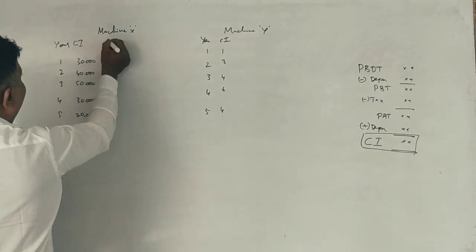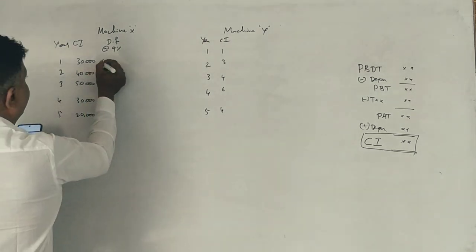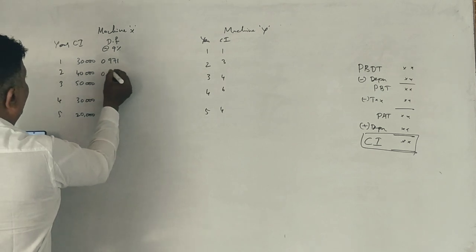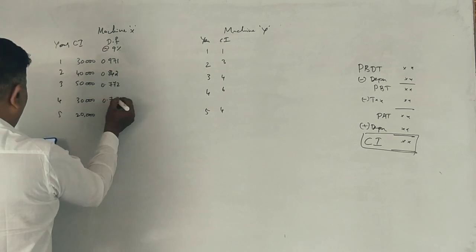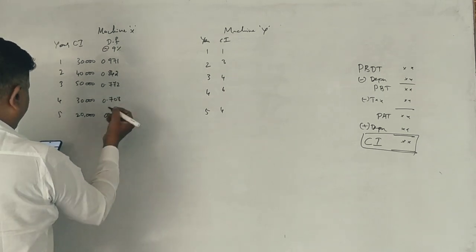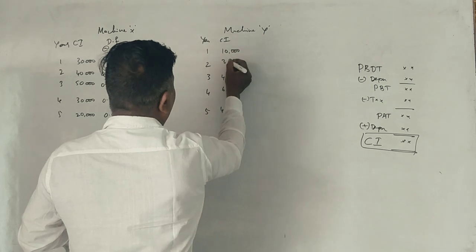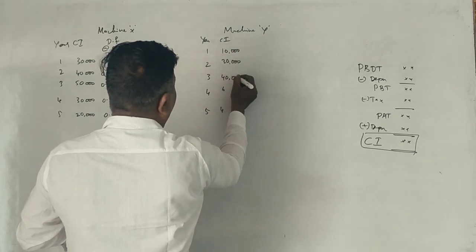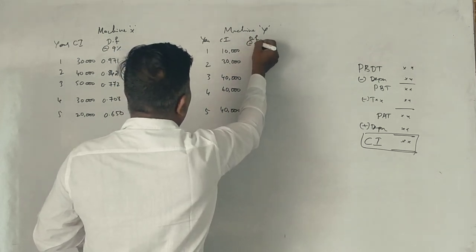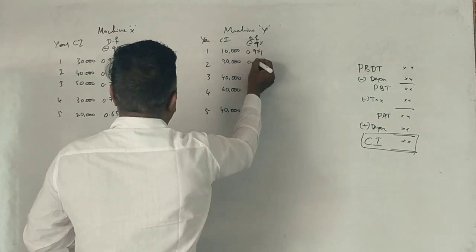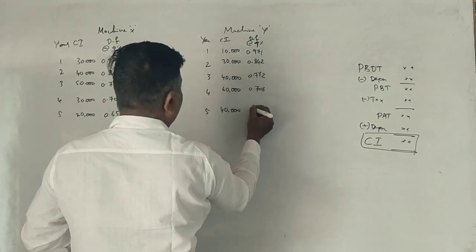This is the discount factor at 9%. 0.971, 0.842, 0.772, 0.708, 0.650. This is the discount factor.